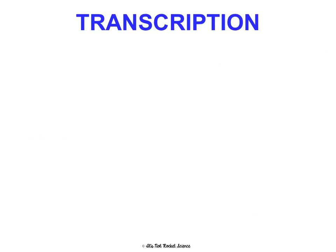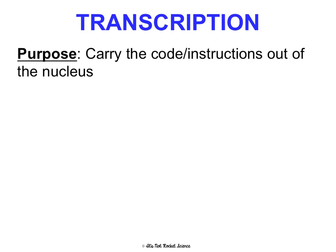The first step is transcription. Think of a transcript as a copy of your grades — it's just a copy. So transcription is making a copy of those instructions. Like going to your grandma's house where the recipe book is, making a copy of the recipe, and then leaving with just the copy to bake the cake at home. The purpose of transcription is to carry the code or instructions out of the nucleus.